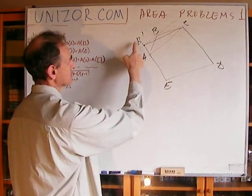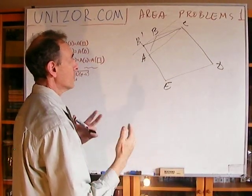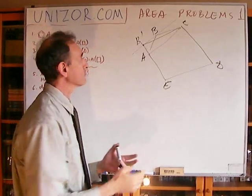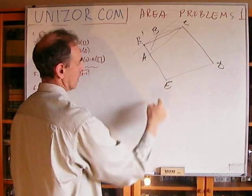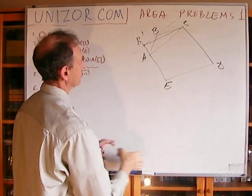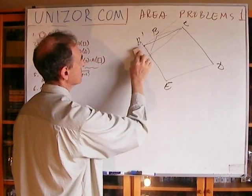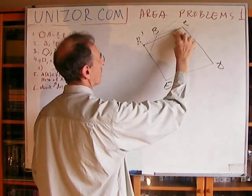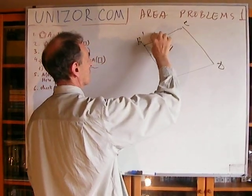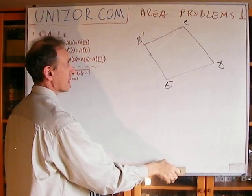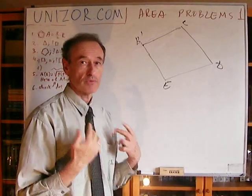Since B', A, E is now one straight line, we have reduced the number of vertices from 5 to 4 — A is no longer a vertex. The new polygon has exactly the same area as before but one fewer vertex.